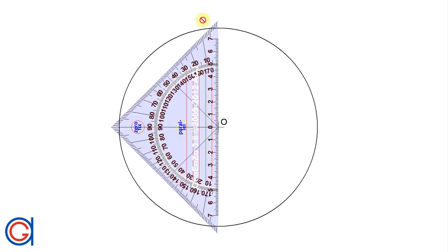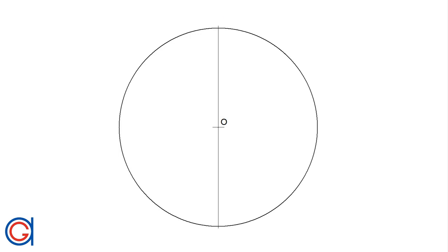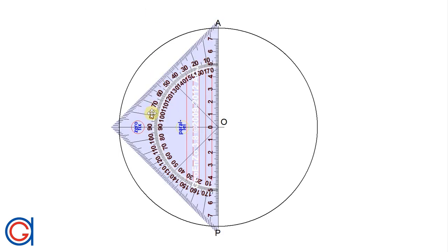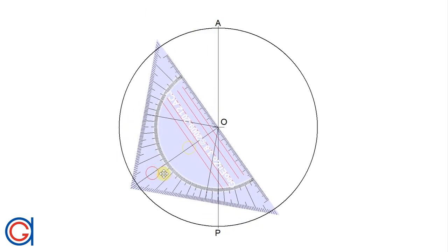The first step is to draw a vertical diameter in the given circle. The extremities of this diameter we will call A and P, as can be seen here on the screen.